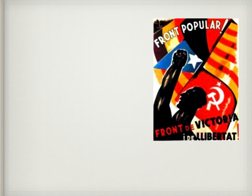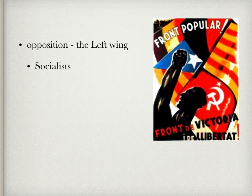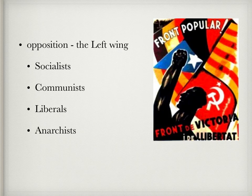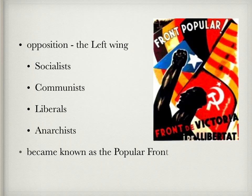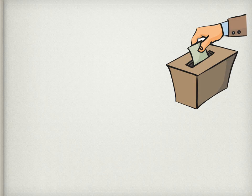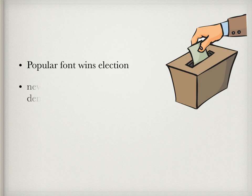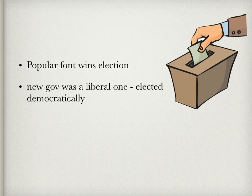In opposition was the entire left wing, made up of socialists, communists, liberals, and anarchists. Together they would be known as the Popular Front. After the election, it was clear that the Popular Front had won. Voters were drawn to the two extreme ends of the political spectrum. The new government was a liberal one, elected democratically, and would be the legal Spanish government from 1936 to 1939.